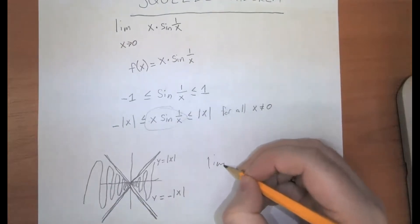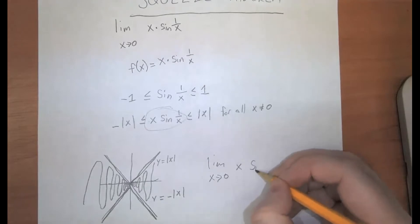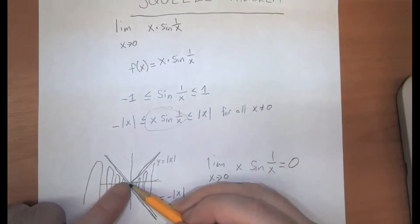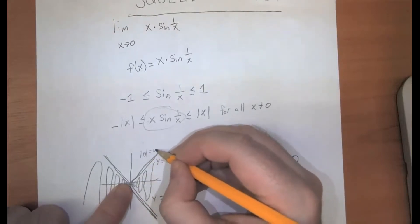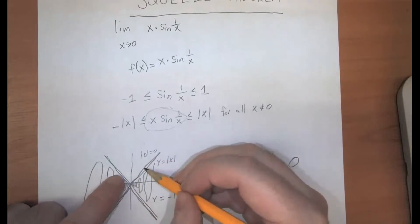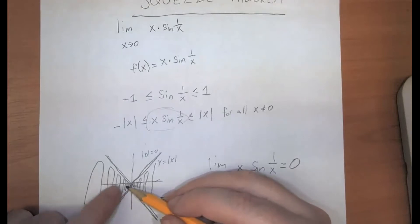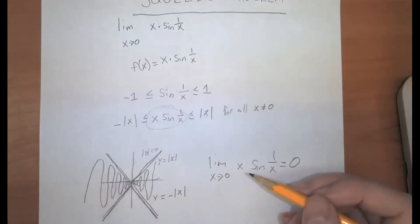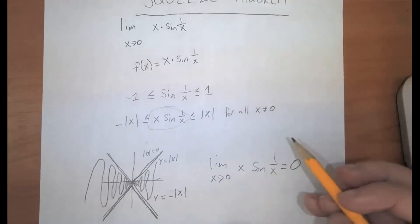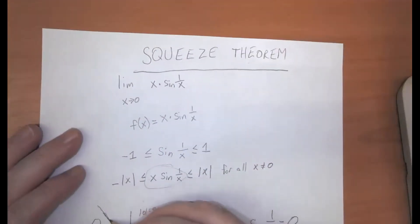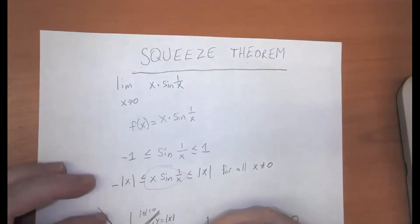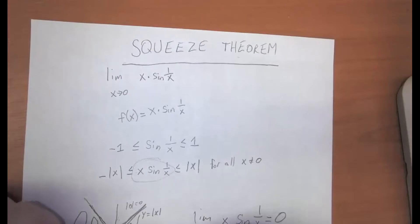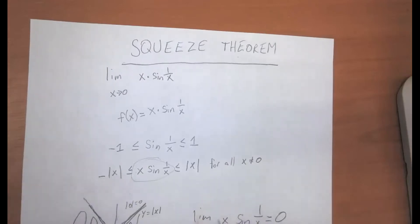The limit as x approaches 0 of x times sine of 1 over x has to be 0. Even though it's wobbling around, it can't be greater than 0, because the absolute value of 0 equals 0. So that's the value the bounding function has at 0 — and the lower bound also equals 0 there. As x gets really, really small, the function can't be more than 0 and can't be less than 0, so it has to equal 0. That's why this is called the squeeze theorem: two bounding functions with the same limit squeeze the function in between to that common value.